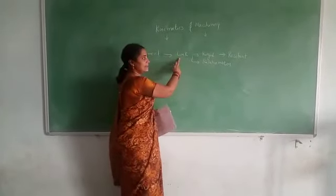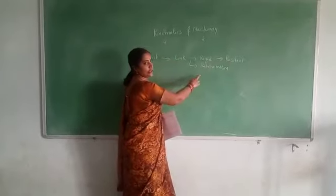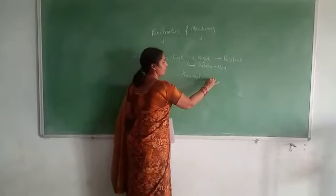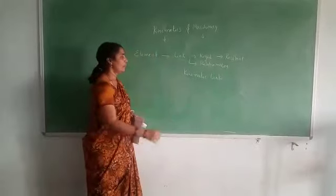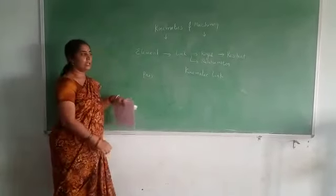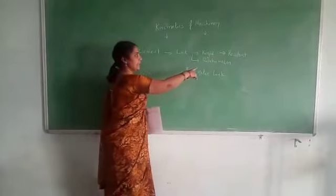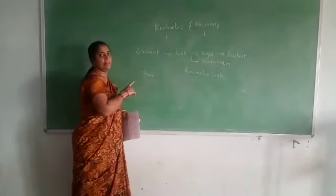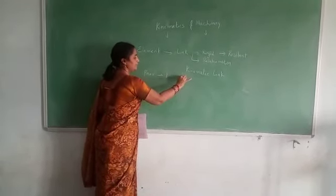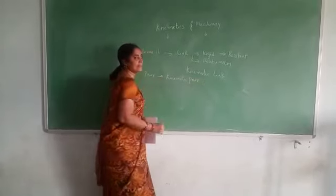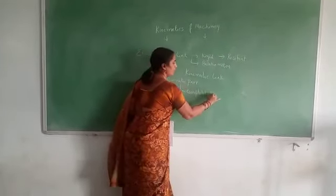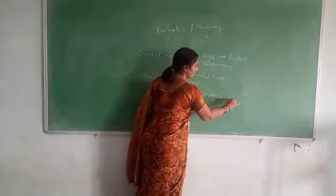So we define the link as a resistant body which has relative motion with another link, and this is called a kinematic pair. When a link is connected to other elements or other links, we call them a pair. Two elements connected to each other that transmit motion are called a kinematic pair, and this pair is called a kinematic pair when it transmits motion that is completely constrained or successfully constrained.